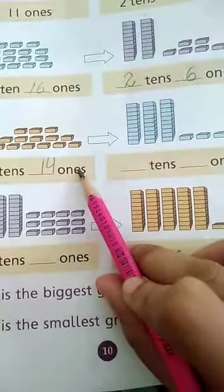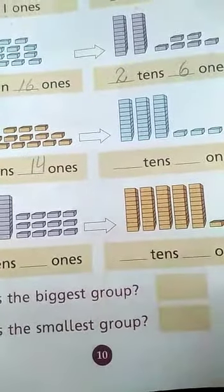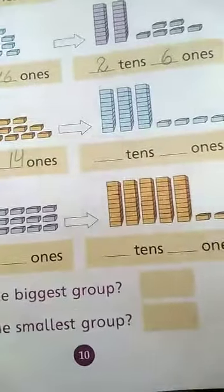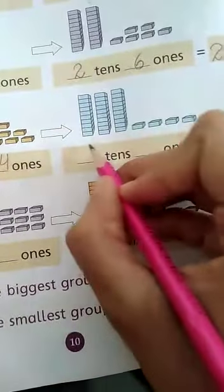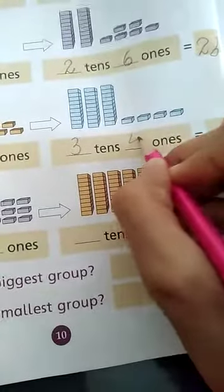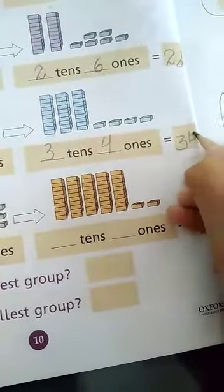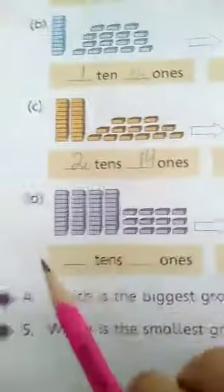So Adil takes 10 ones and puts them in the tens column. Now Adil has 3 tens and 4 ones. 3 tens and 4 ones is equal to 34. Okay.